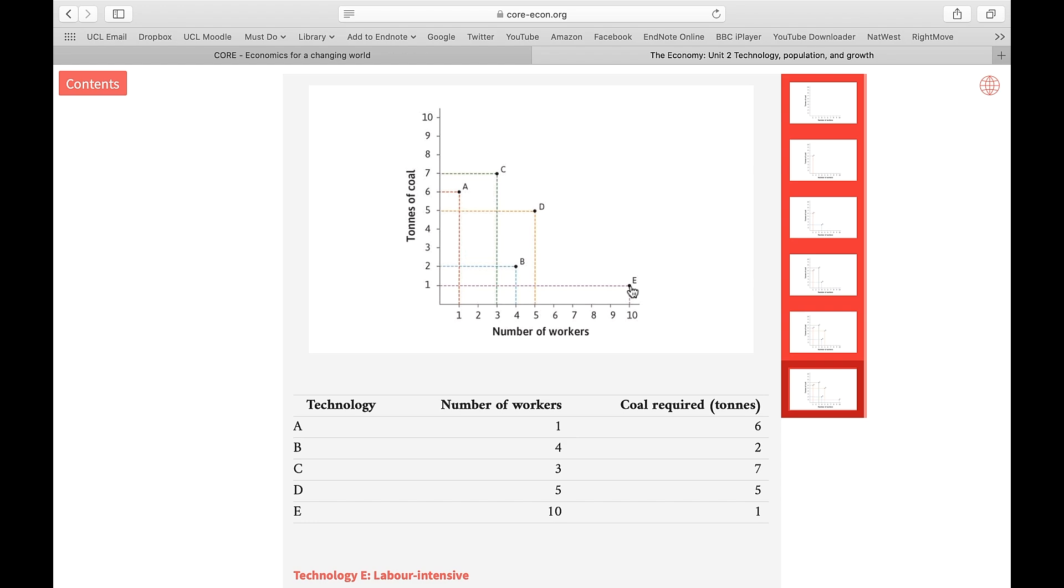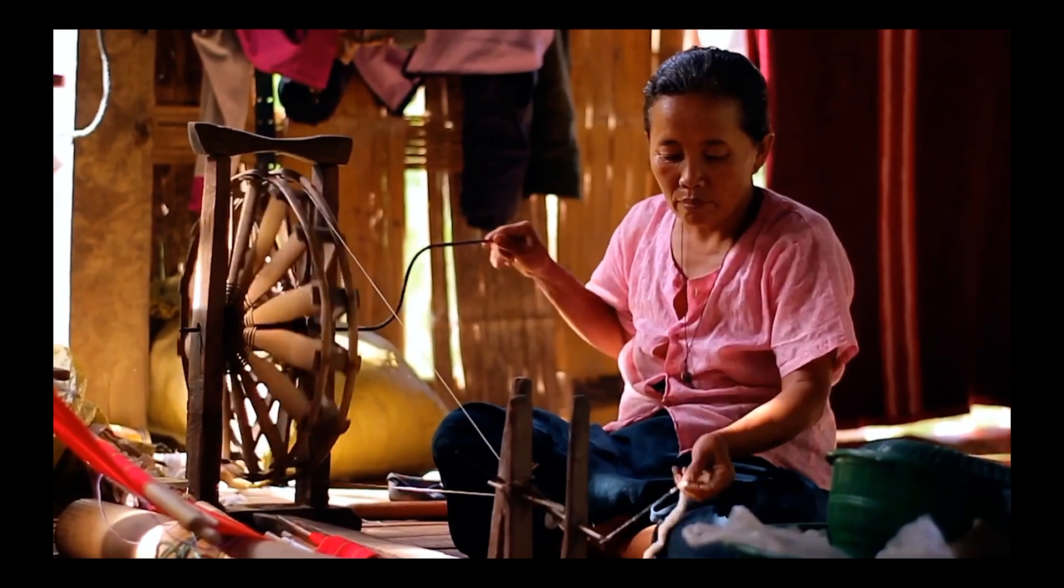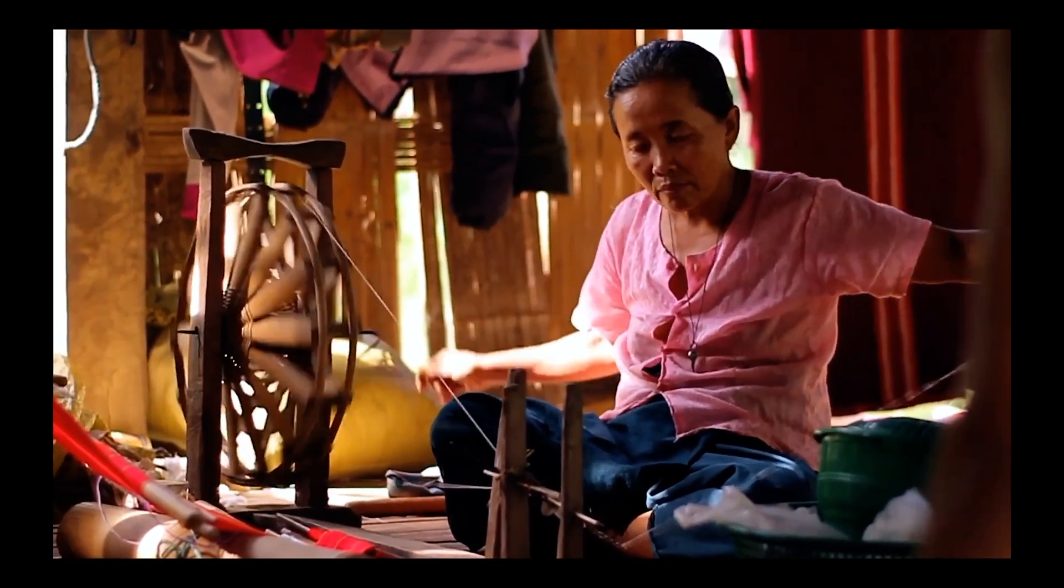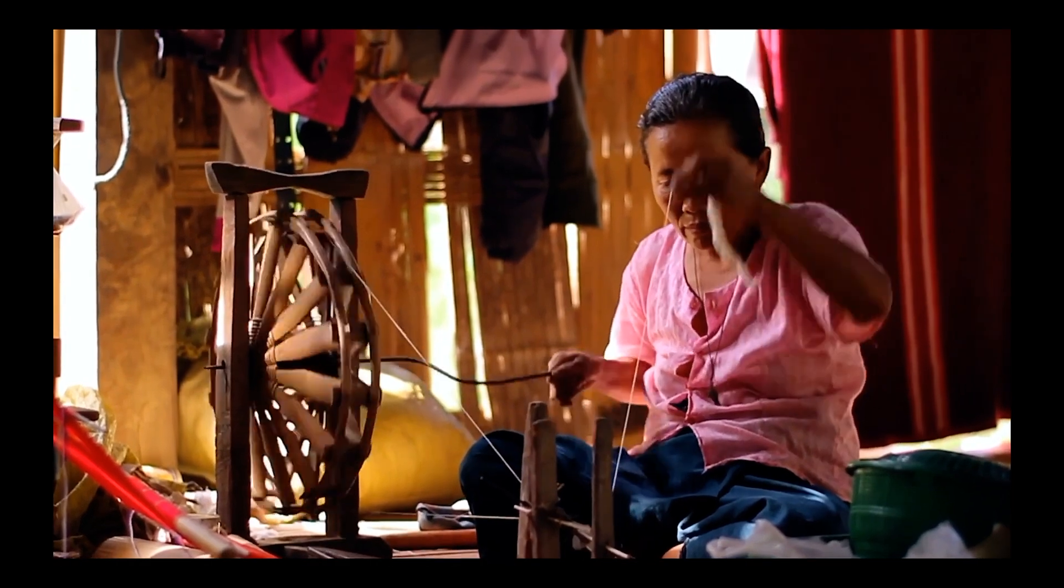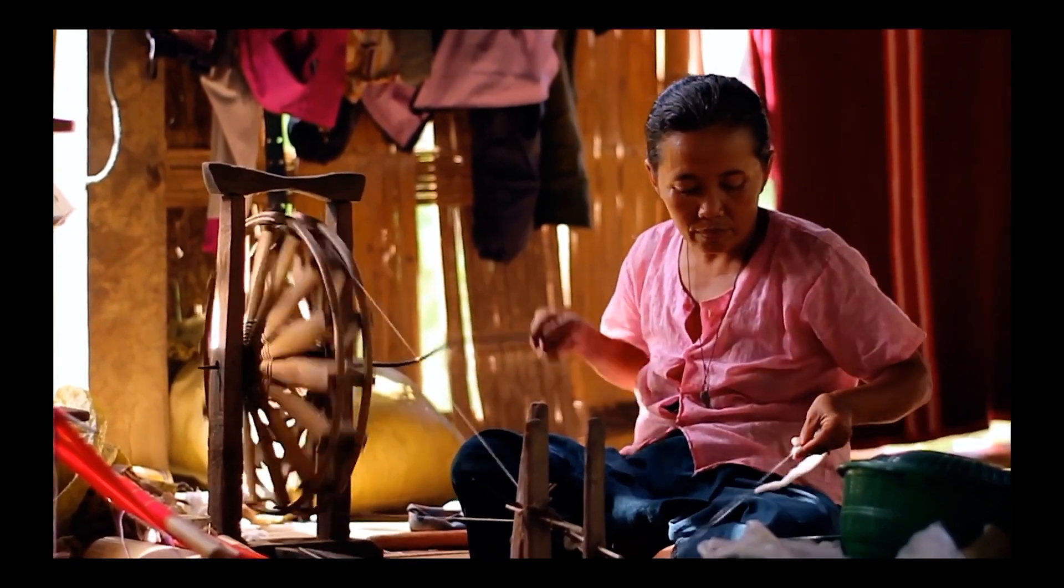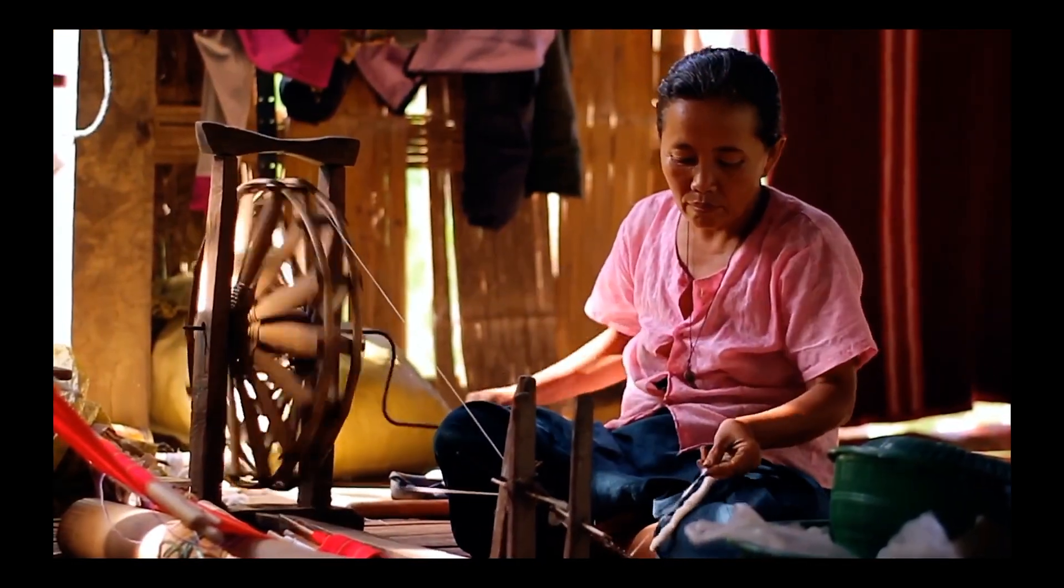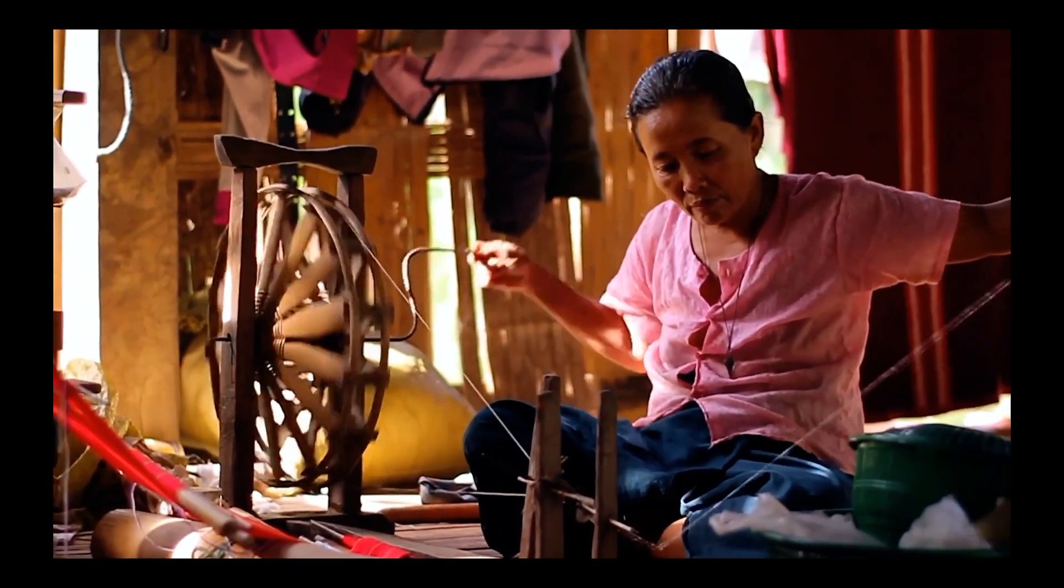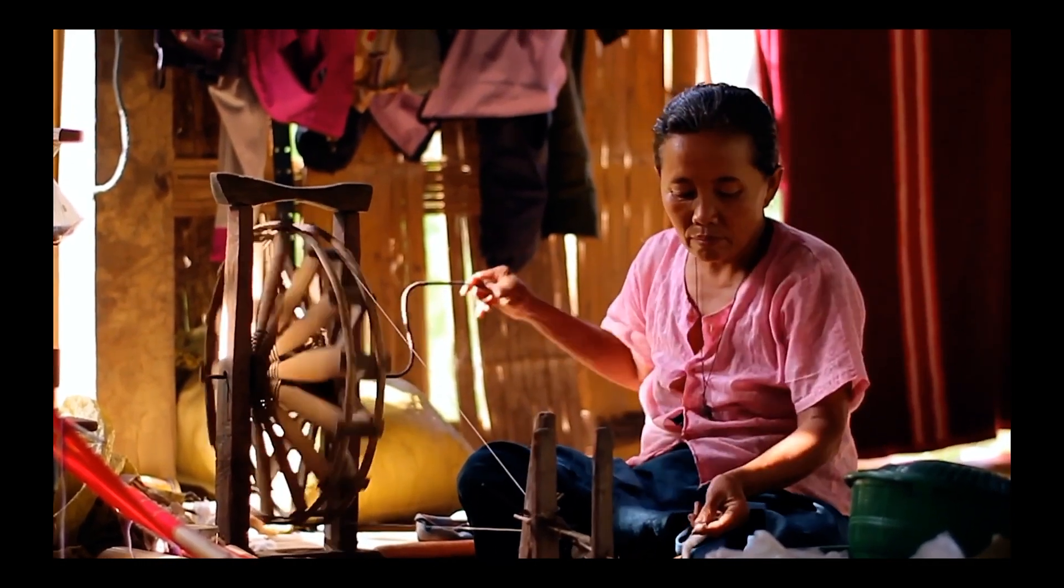A real-world example is this. This way of producing cloth does not require a sophisticated technology. It does not require a lot of energy. It's actually the way we used to produce cloth before the Industrial Revolution. But to produce 100 meters of cloth in this way, you're going to need a lot of workers. So it's a very labor-intensive technology.